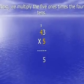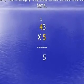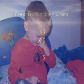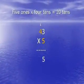Next, we multiply the five ones times the four tens. When we do this, we come up with 20 tens.